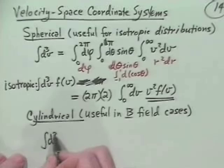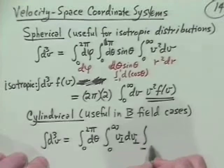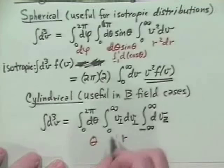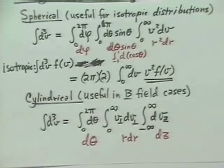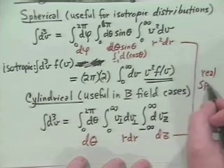For the cylindrical velocity space coordinate system, useful in magnetic field cases, the integral over all velocity space is ∫₀²π dθ ∫₀^∞ v_perp dv_perp ∫₋∞^∞ dvz, analogous to the real-space cylindrical element dθ · r dr · dz. With this brief introduction to distribution functions and velocity space coordinates, next time we'll launch into Landau damping and kinetic instabilities from Chen's Chapter 7.